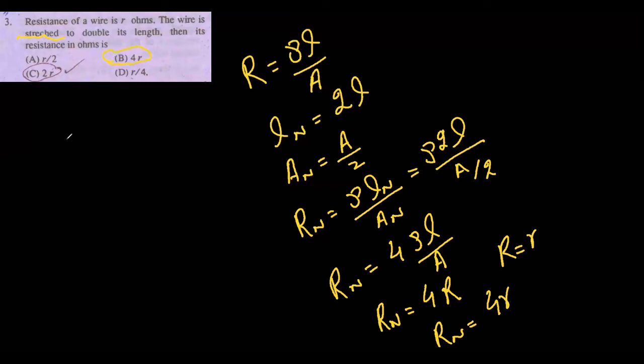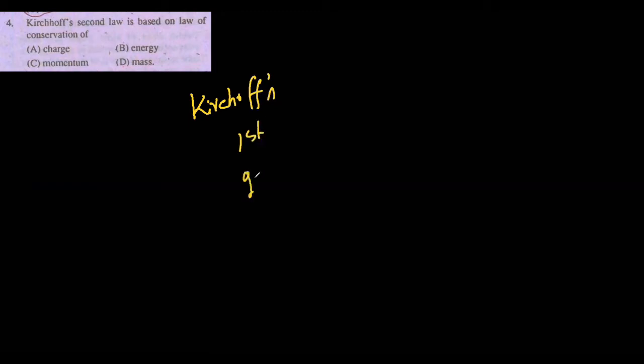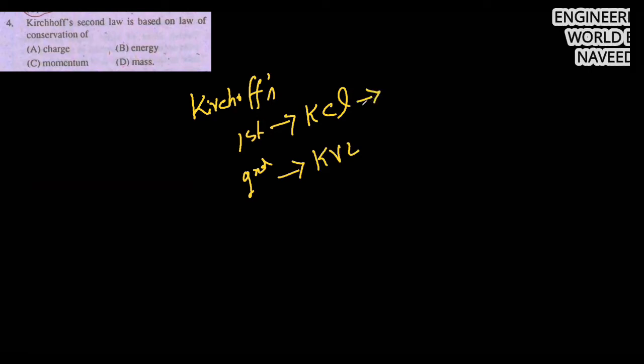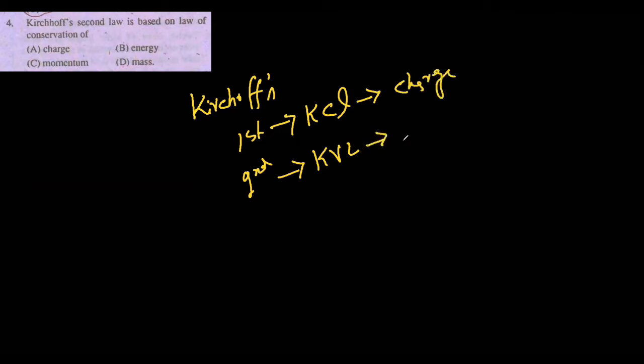Next MCQ: Kirchhoff's second law is based on the law of conservation of — charge, energy, momentum, or mass? There are two Kirchhoff's laws. The first law is KCL, Kirchhoff's Current Law, where charge is conserved. The second law is KVL, Kirchhoff's Voltage Law, where energy is conserved. So option B, energy, is the correct answer.